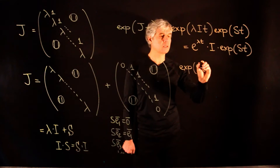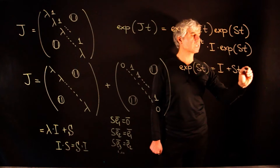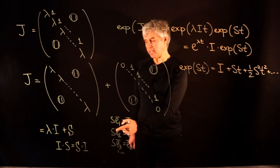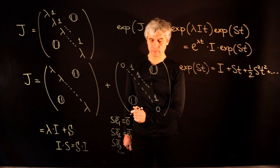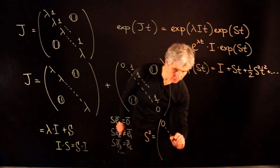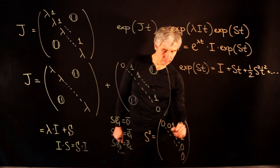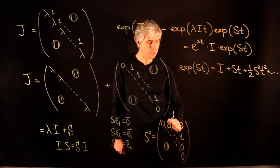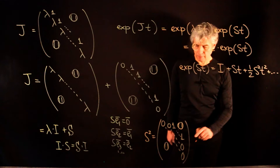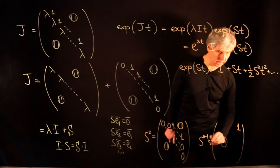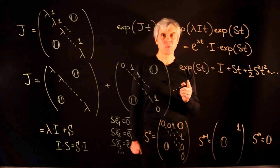Now let us look at the exponential of St. This is the identity plus St plus (1/2)S²t² and so on. S shifts indices by one, so S² shifts by two. Higher powers of S move the line of ones further up toward the top-right corner. If n is the size of the matrix, then S^(n-1) has a single one in the top-right corner, and S^n is the zero matrix. So the exponential of St is a finite sum — an upper triangular matrix with ones on the diagonal, t's along the next line, t²/2 along the next, and so on, up to t^(n-1)/(n-1)! in the top-right corner.